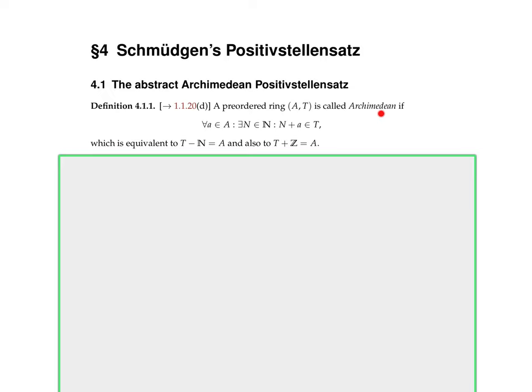We had already defined what an Archimedean ordered field is, and the definition is exactly the same here: for all a in A there exists an n in ℕ such that n plus a lies in T. The difference is just that now this is a commutative ring instead of a field and T is a pre-order instead of an order.